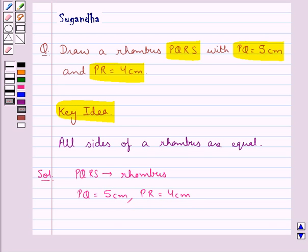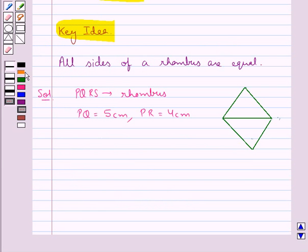Let's draw a rough sketch of this rhombus PQRS. Consider this rhombus PQRS. This is the rough sketch where we are given PQ equal to 5 cm. Now, as we know that all sides of the rhombus are equal, PQ equal to QR equal to RS equal to PS equal to 5 cm. And we are given that PR is equal to 4 cm.